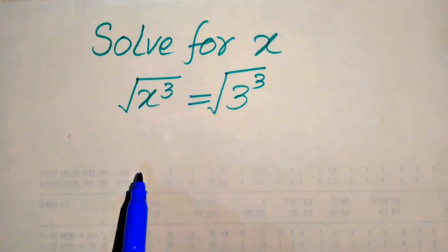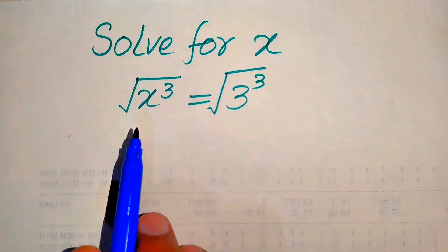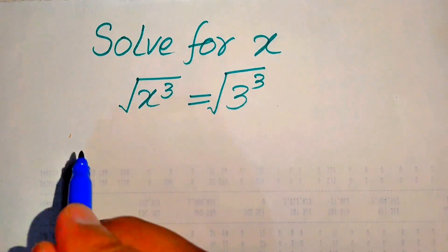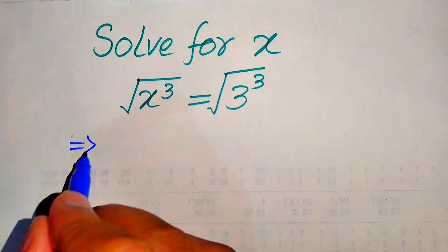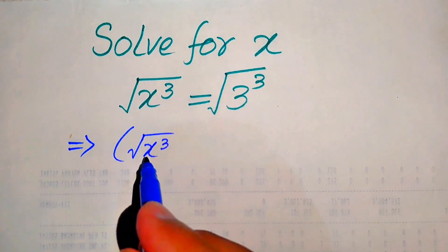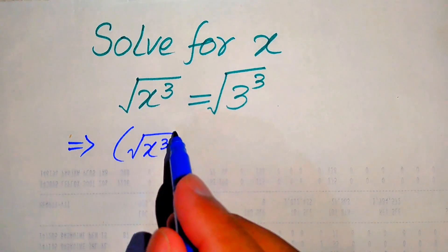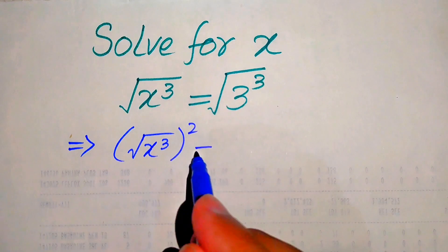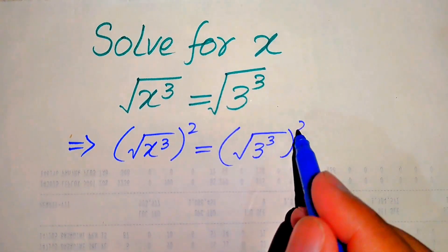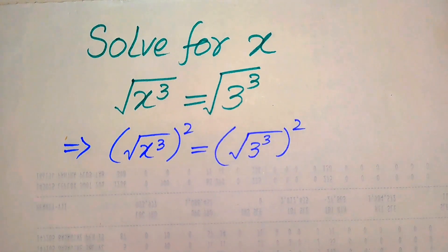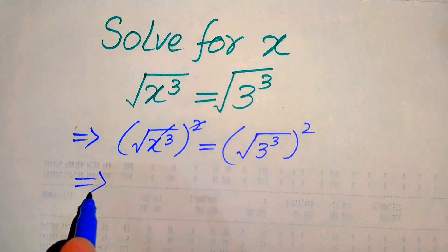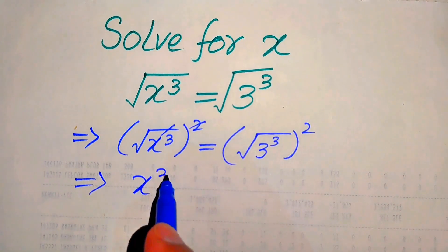First, we need to eliminate the square root sign on both sides. For this, we take the squaring on both sides. So after squaring, it will be written as the square root of x cubed, whole squared, equals the square root of 3 cubed, whole squared. Now this square and the root cancel out, and on the left hand side we get x cubed.